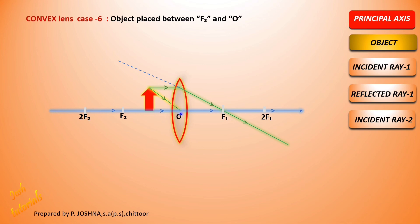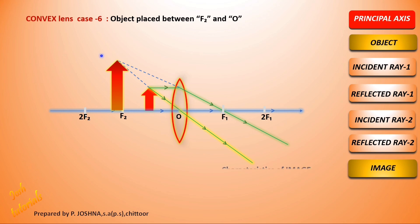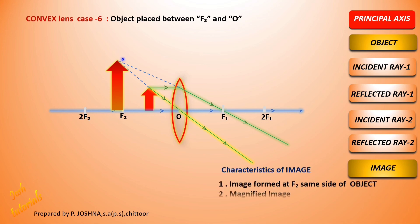The second ray passes through the optic center and moves away without deviation. Extending that ray backwards as well, the two backward extensions meet near F2 on the same side as the object. The image is highly magnified, virtual — meaning we can see it in the lens with our eyes but it cannot be caught on a screen — and erect.